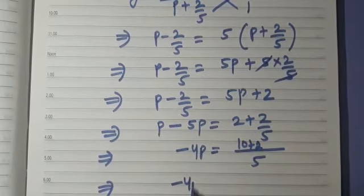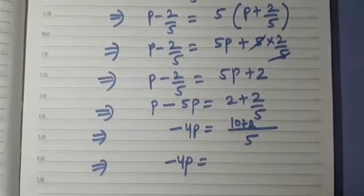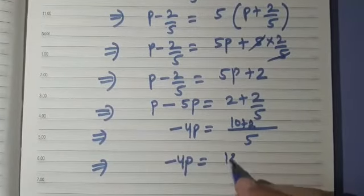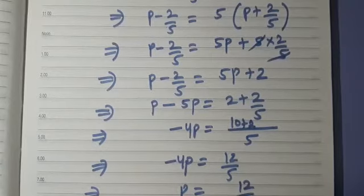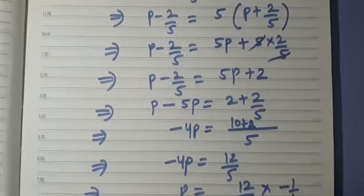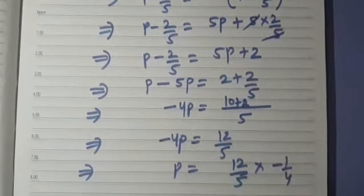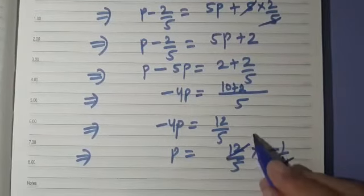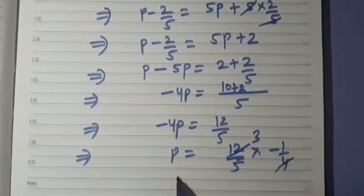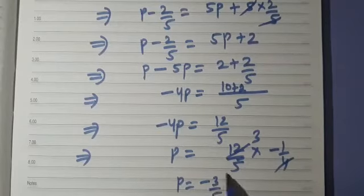This implies minus 4p is equal to 12 upon 5, so p is equal to 12/5 into minus 1/4. Simplifying, we get p is equal to minus 3 upon 5.